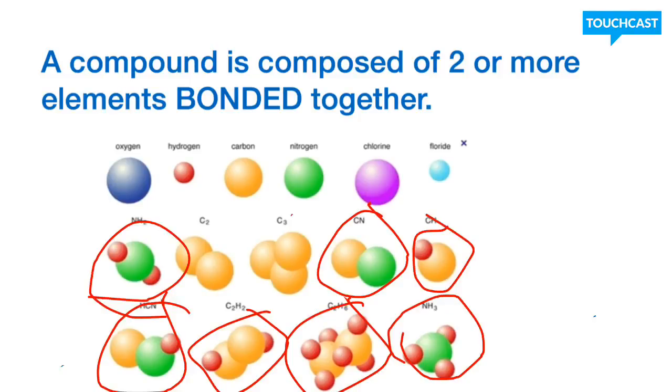All right, basically, I circled all of the compounds and the ones that are remaining are going to be pure elements. Now, if you look there at C2 and C3, the reason why they're not a compound is it only has one type of atoms, only one element present. All right, let's go ahead and look at the properties and how they basically change during our chemical reactions.